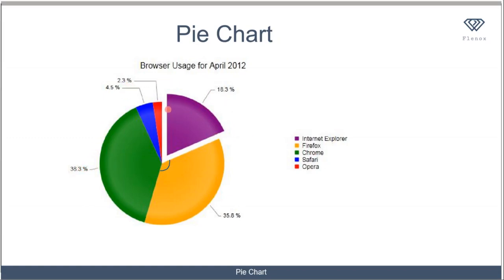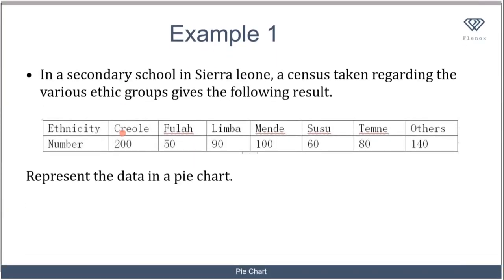You should note that the angles are in degrees, but we can also show them in terms of percentage. This next example will illustrate that point. In a secondary school in Sierra Leone, a census regarding the various ethnic groups gives the following results.